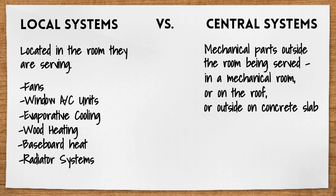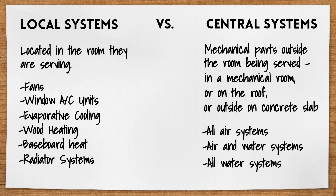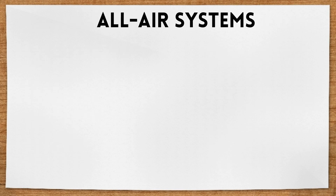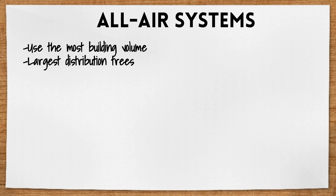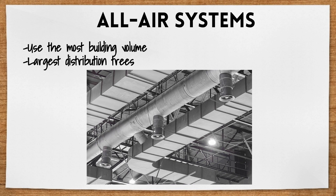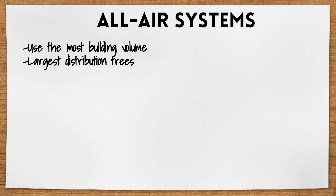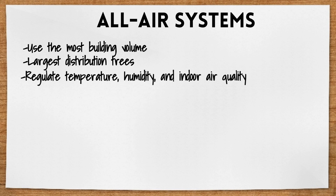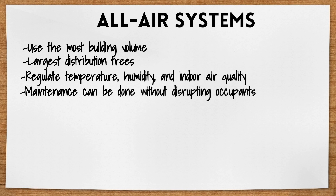Central systems can be split up into all air systems, air and water systems, and all water systems. All air systems use the most building volume since they require the largest distribution trees — those sheet metal ducts that usually look like this. However, they do give the best results by regulating both temperature and humidity as well as indoor air quality. They typically concentrate all their mechanical equipment in the central mechanical room so that maintenance can be done without disrupting the building occupants.